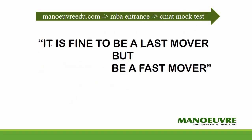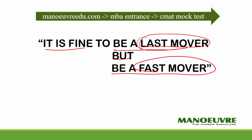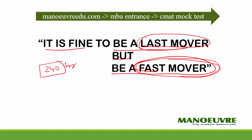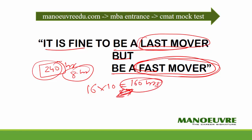Finally, it is fine to be a last mover but be a fast mover. If you have started late preparation for CMAT and are struggling, you have to work hard for the next 10 days. You have 240 hours in 10 days — spending 8 hours on other activities leaves you 16 hours per day, which is 160 hours total. If you dedicate these 160 hours, you can turn the game around. The ball is in your court.